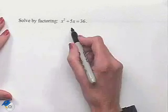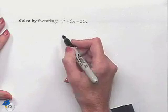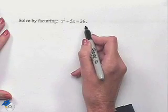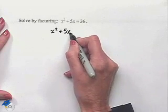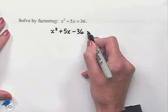To use factoring, we need to have the equation set equal to 0. So in our first step, we're going to subtract 36 from both sides of the equation. That will give us x squared plus 5x minus 36 equals 0.